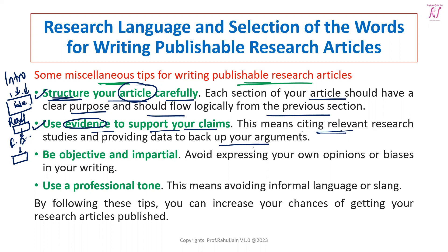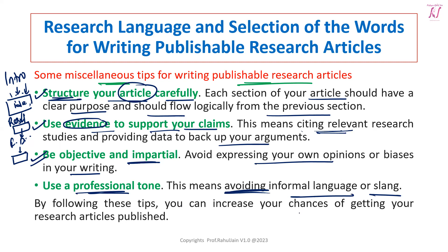Be objective and impartial — avoid expressing your own opinions or biases in your writing. Whatever the objectives are, you should not get involved by giving your own opinions or biases. Just use the data and conclude based on what the data says. Use a professional tone — this means avoiding informal language or slang. By following these steps, you can definitely increase your chances of getting research articles published.